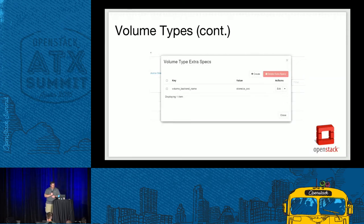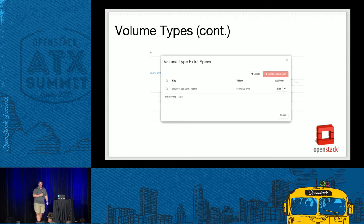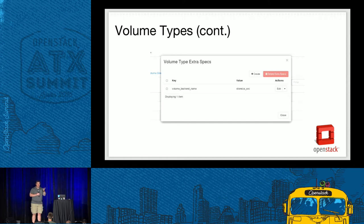Once created, when listing extra specs for a volume type, you can see 'volume_backend_name' set to 'storwize_svc'. In a real-world example, you'd have a number of other specs set there. The scheduler checks which configured backend satisfies the requirements. If you're not specifying a single backend, multiple backends may satisfy the requirement and the scheduler will balance allocation between them depending on which scheduler you're using.